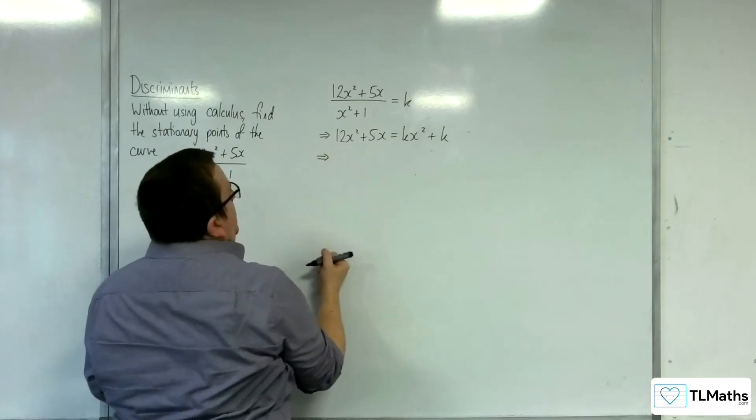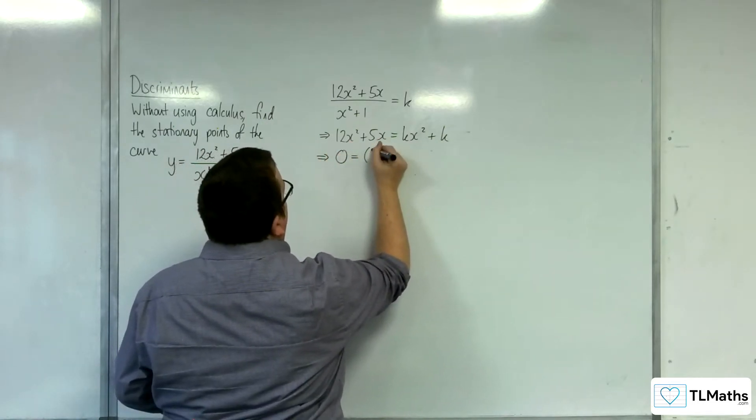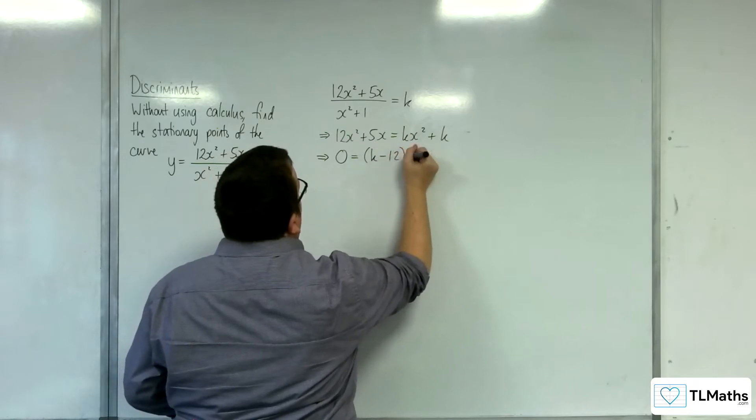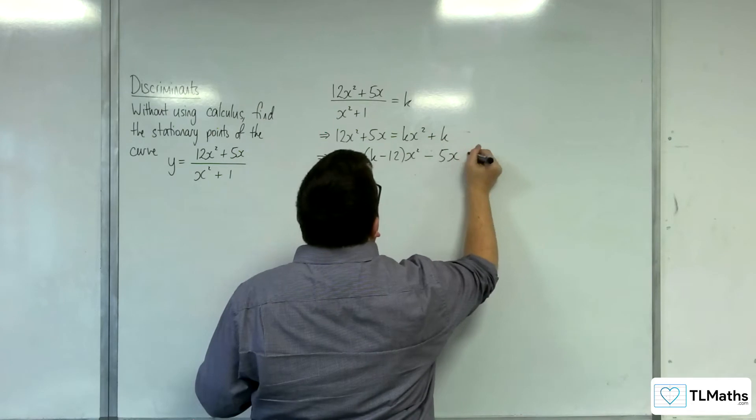Then I need to rearrange this. I'm going to get everything onto the right-hand side. So, we're going to have k take away 12x squared take away 5x plus k.